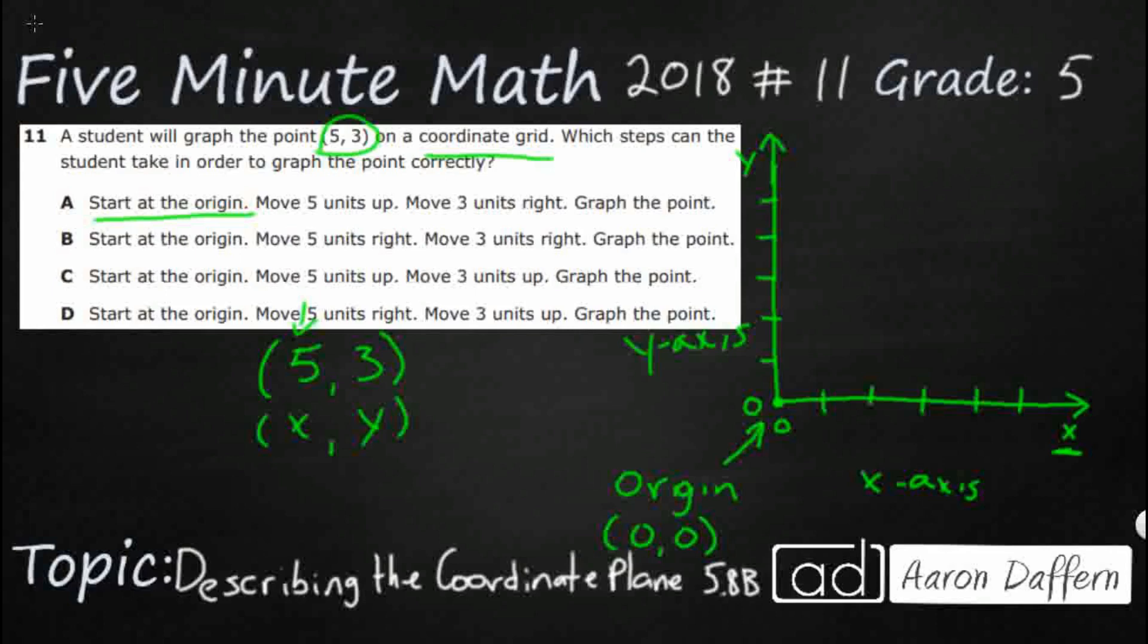We are going to start right there, and then we're going to move in two directions. First, we are going to move along the x-axis, which means we are going to be moving to the right, because as we start with our zero, we have positive numbers here. When you get into sixth grade, you'll learn about negative numbers, and this coordinate grid gets a little bit more complicated.